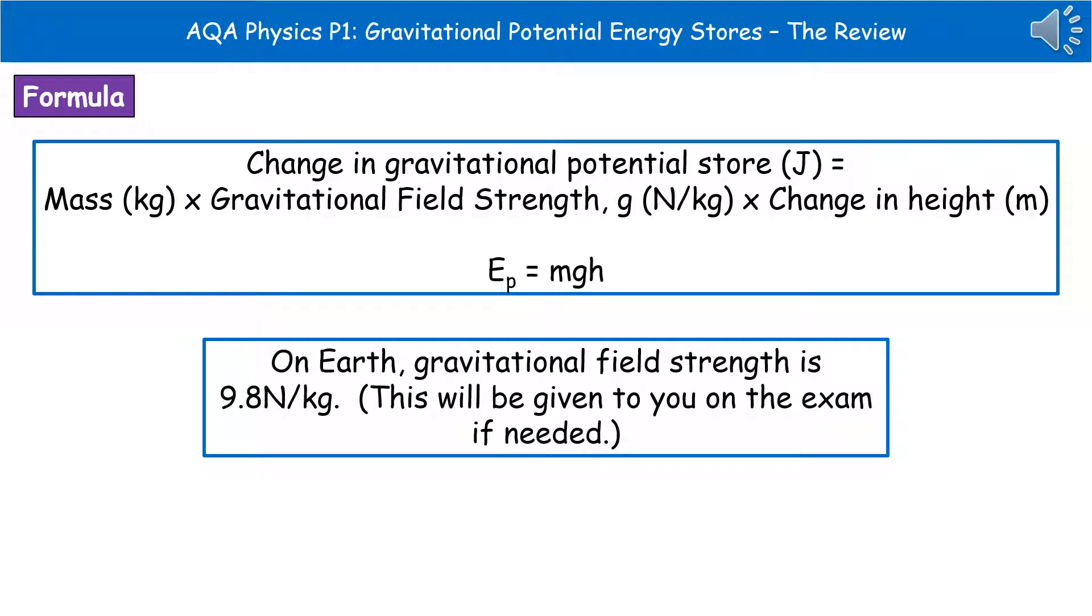Another equation that we can use to calculate the change in gravitational potential store is mass times gravitational field strength times the change in height. This is again an equation that you need to learn for your exam. The shorthand is EP equals mgh. If they're going to ask you to use the gravitational field strength, they will give it to you in the question. On Earth, that would be 9.8 newtons per kilogram, but you don't have to remember that.